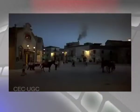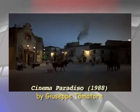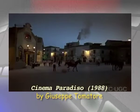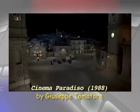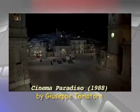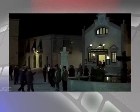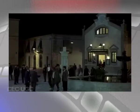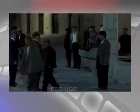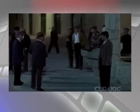Another example from the same film shows a town square during the night. The space is established as well as the time through lighting. The scene is established and then we move into the details of what is happening within the scene. These shots are called establishing shots.